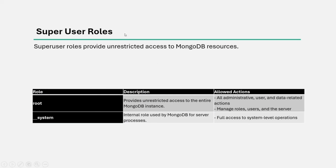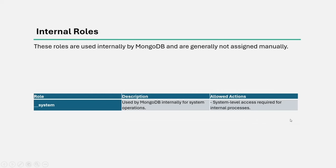Then we have the super user role, which provides unrestricted access to MongoDB resources. The root role provides unrestricted access to the entire MongoDB instance — all administrative, user, and data-related actions can be performed, including managing roles, users, and the server. The __system role is used internally by MongoDB and provides full access to system-level operations. The internal roles category also contains this __system role, which is used by MongoDB for internal system operations requiring system-level access.